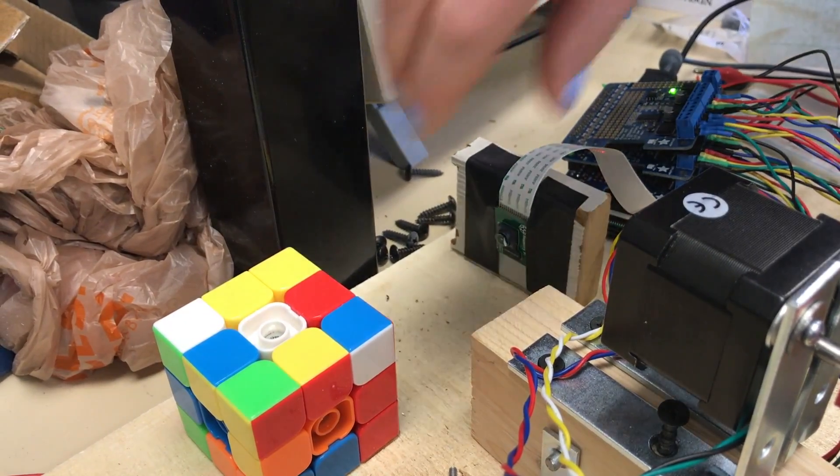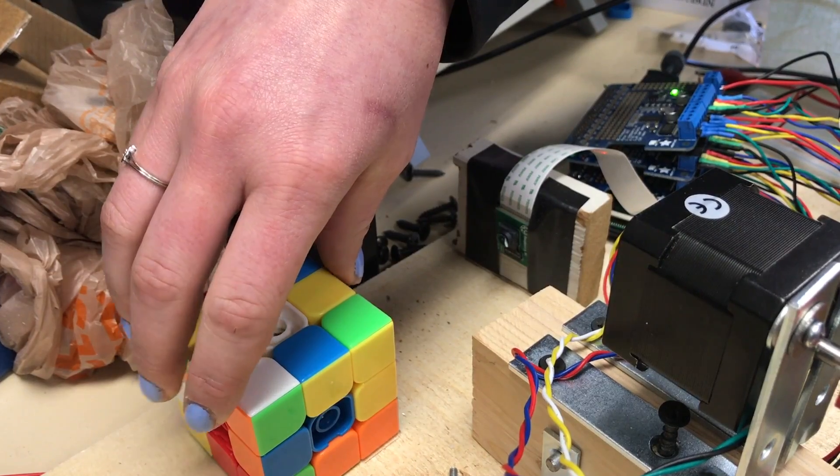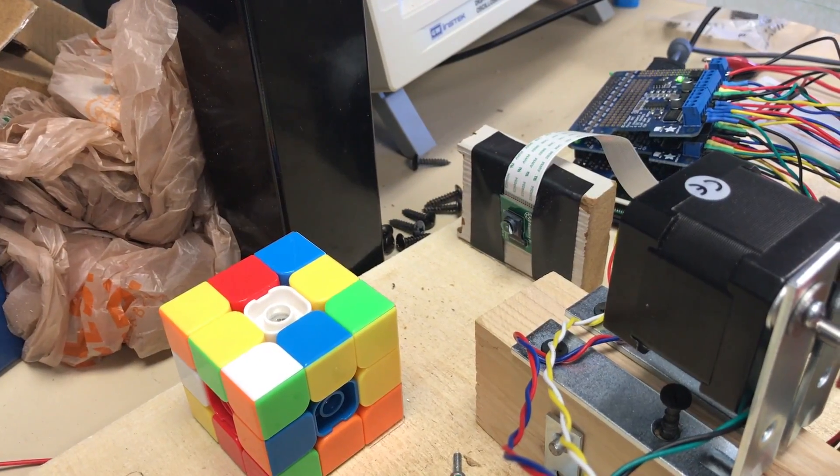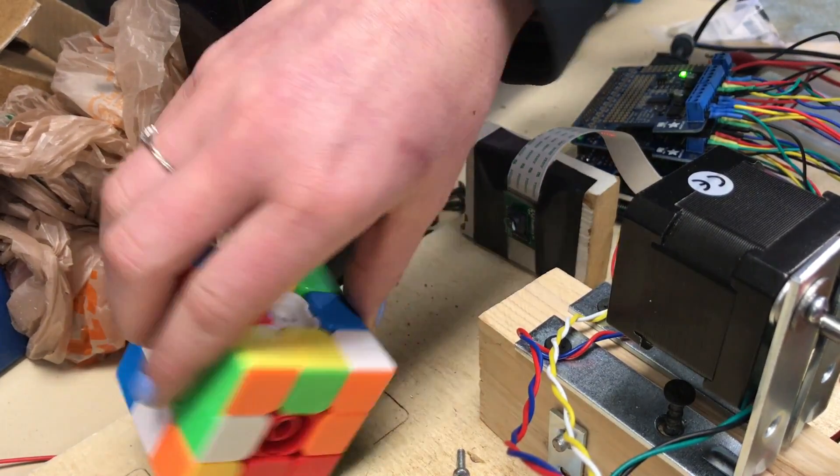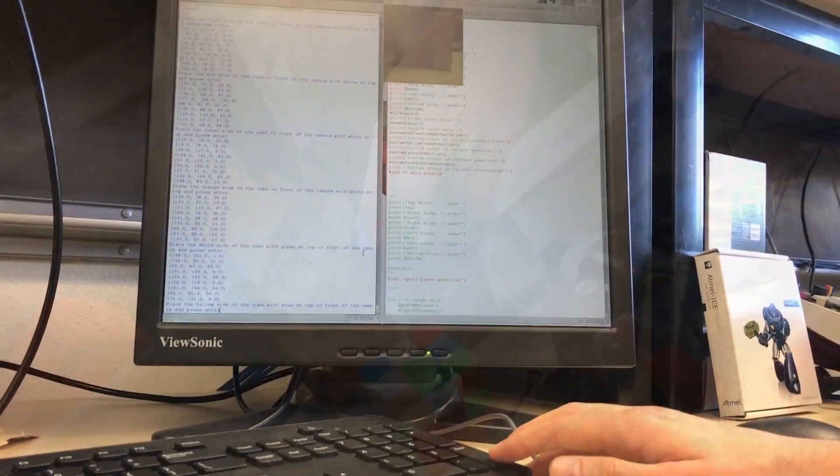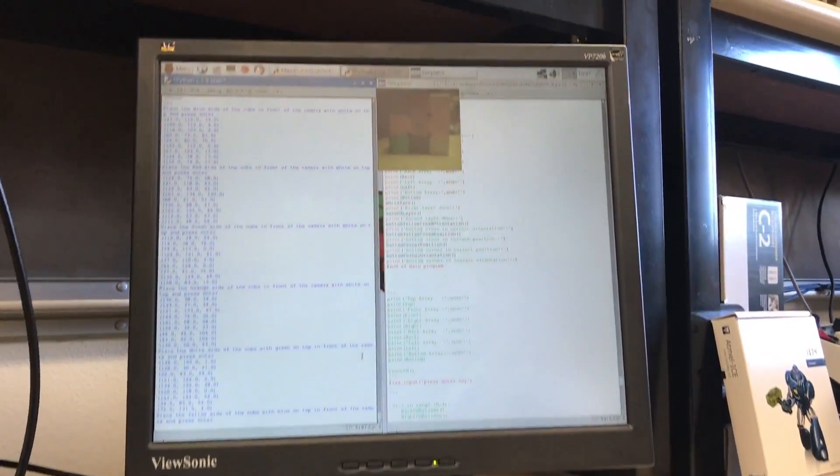In order to solve the Rubik's Cube, we must first take pictures of a scrambled cube to put the colors into memory. The Raspberry Pi camera takes care of this, and we use RGB ranges to detect color correctly.